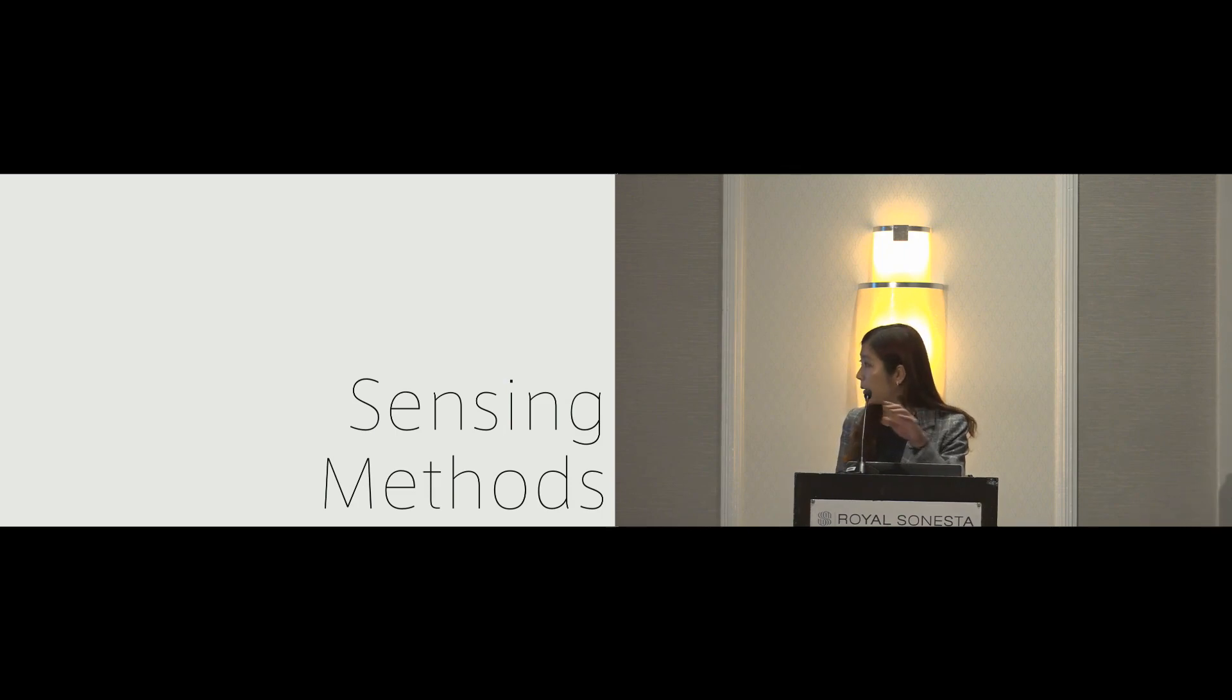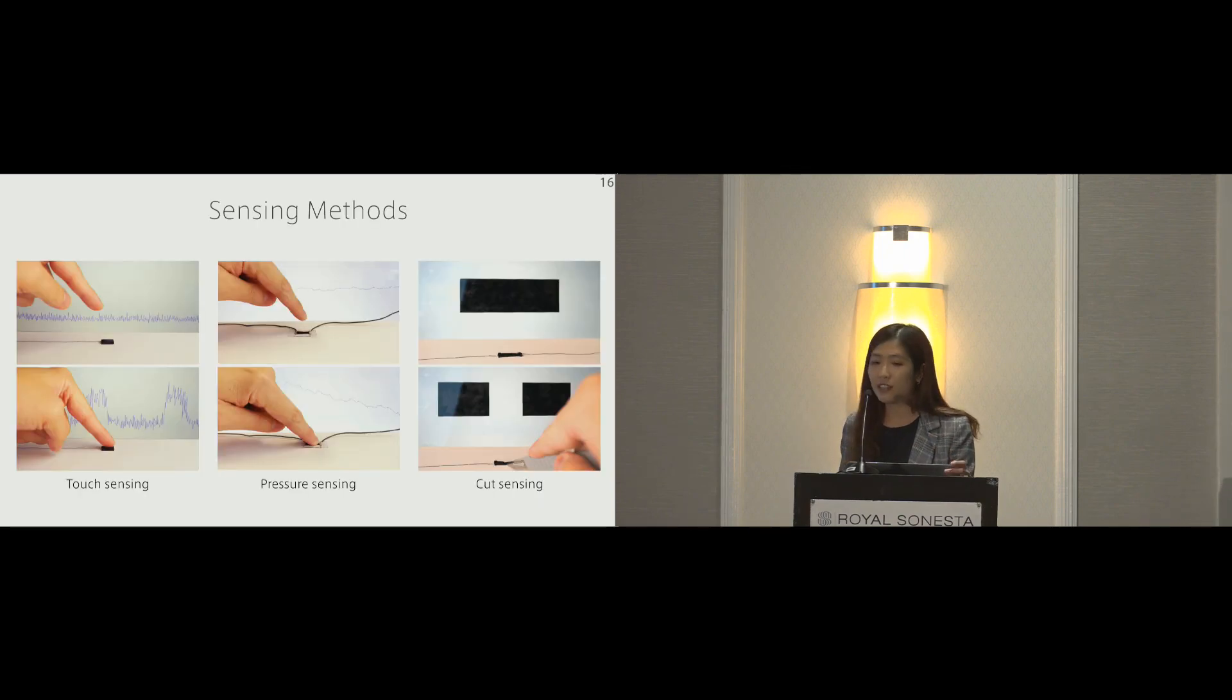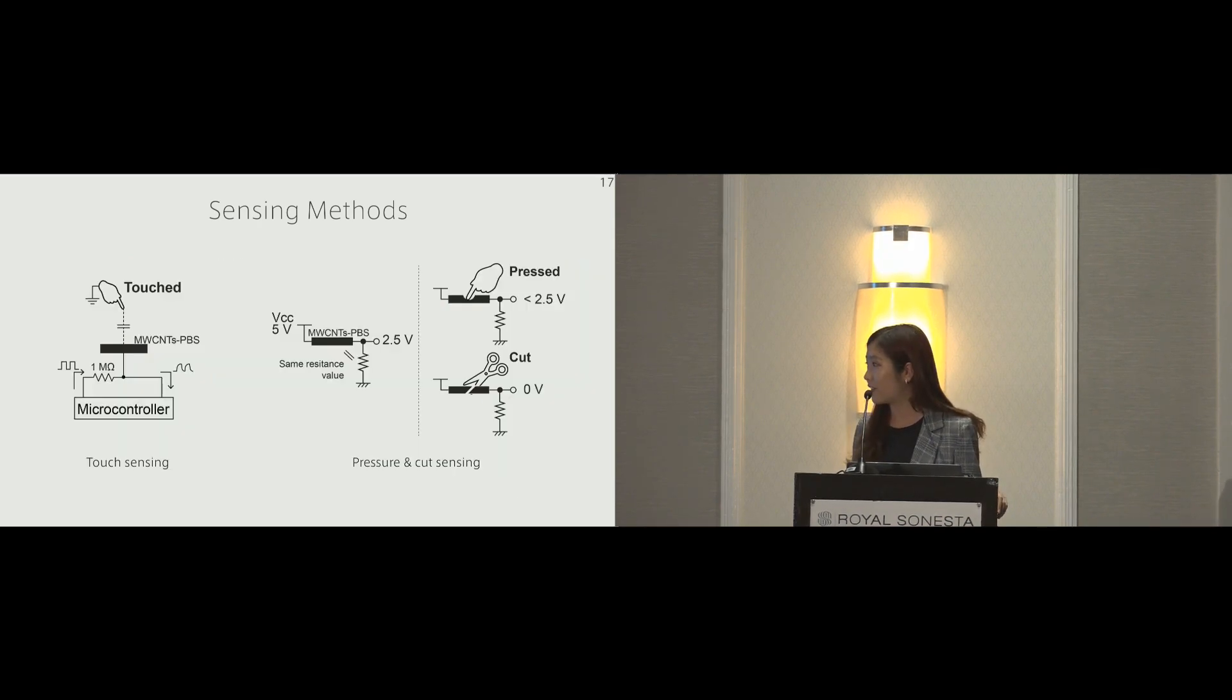We propose three sensing methods in our paper. We can sense a touch of a human finger, we could also sense how much pressure is pressed on the material. A strip of multi-walled carbon nanotube can be used as a cut sensor. As our material can self-heal, we can sense the cut and then heal the strip back, use this sensor multiple times. Our approach to realize touch sensing is by measuring the capacitance between multi-walled carbon nanotube and the human body. The working principle for pressure and cut sensing is relatively simple - they share the same logic for the circuit. Multi-walled carbon nanotube is used as a matching resistor between 5 volts and the ground.